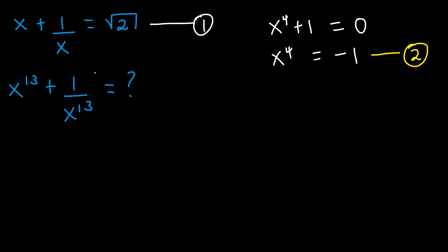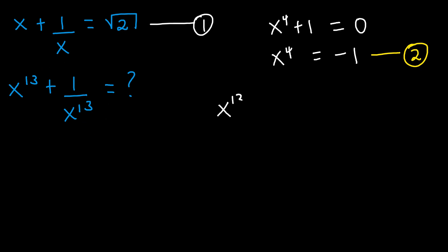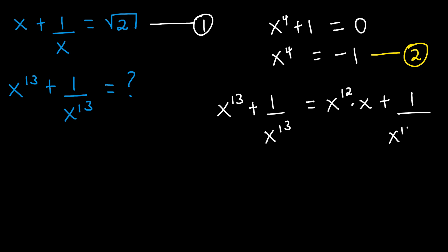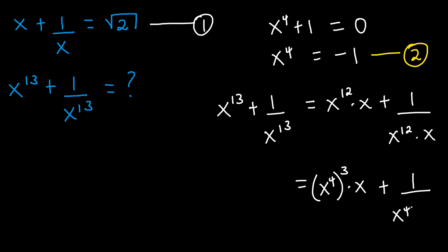Now if you remember, we were asked to find x to the power of 13 plus 1 divided by x to the power of 13. This can be written as x to the power of 12 times x, plus 1 divided by x to the power of 12 times x. And since 12 is the same as 4 times 3, this becomes x to the power of 4 raised to the power of 3 times x, plus 1 divided by x to the power of 4 raised to the power of 3 times x.